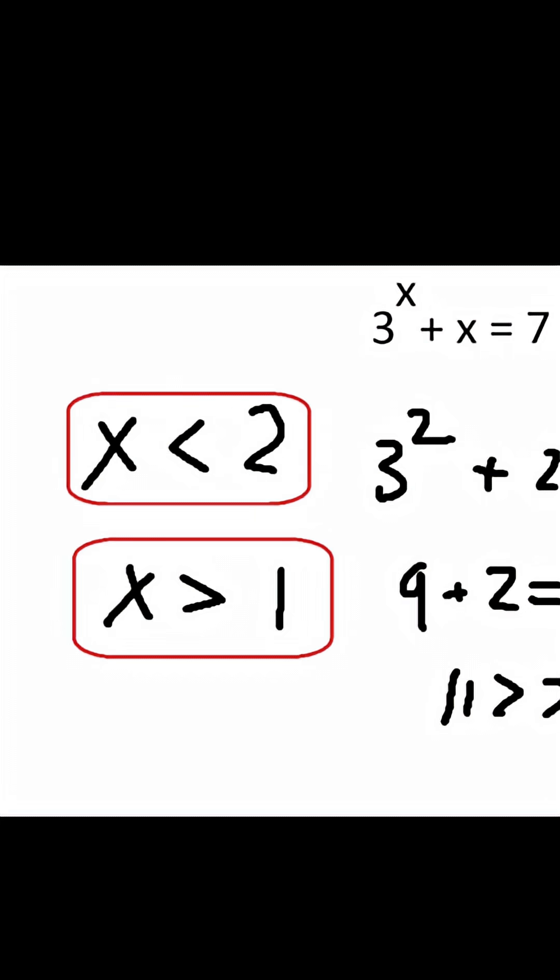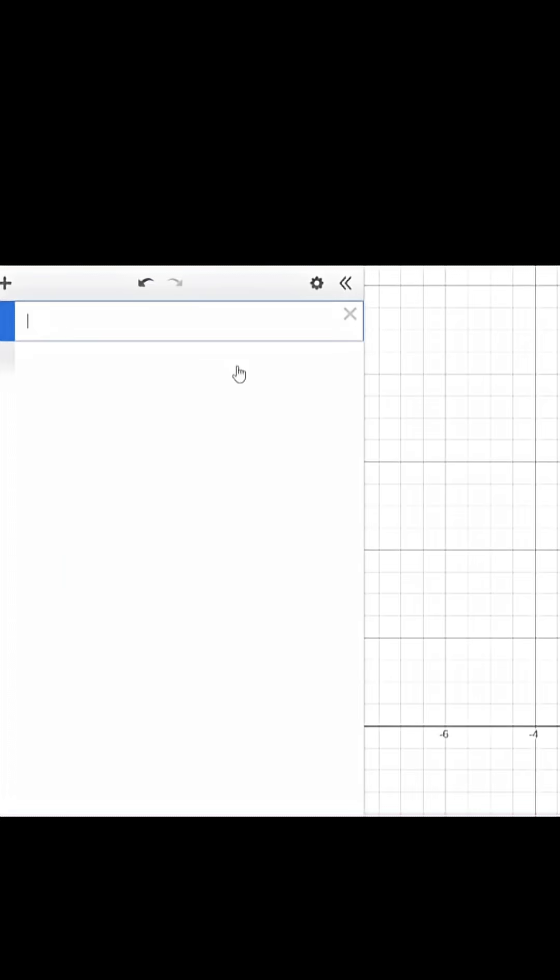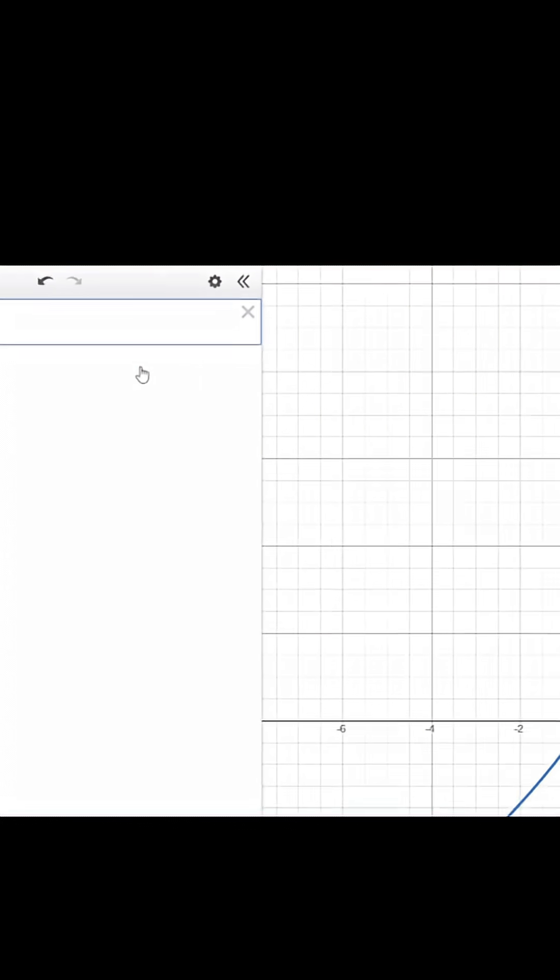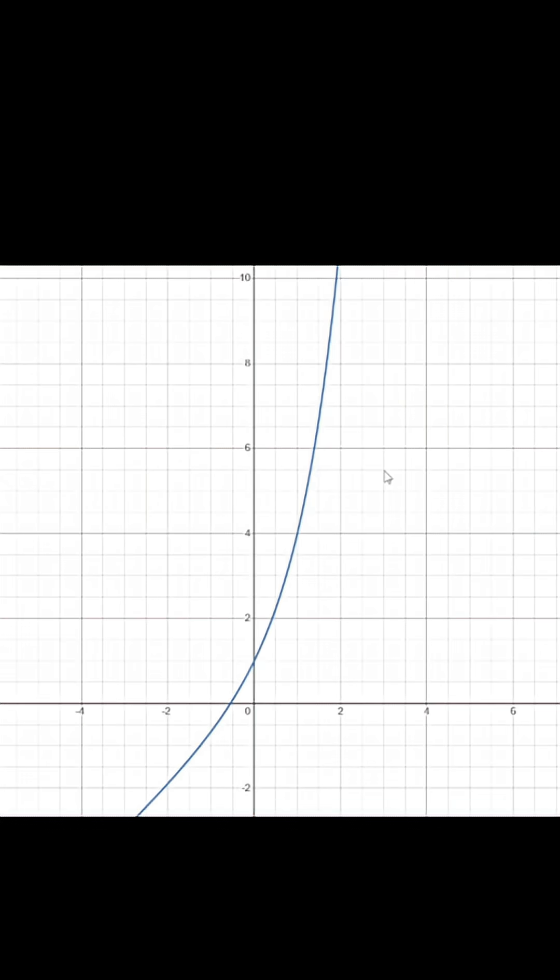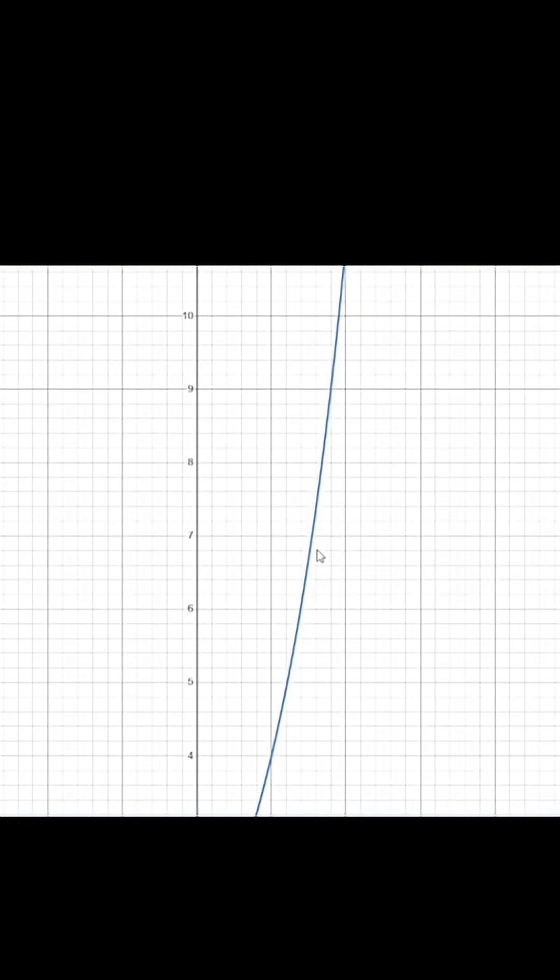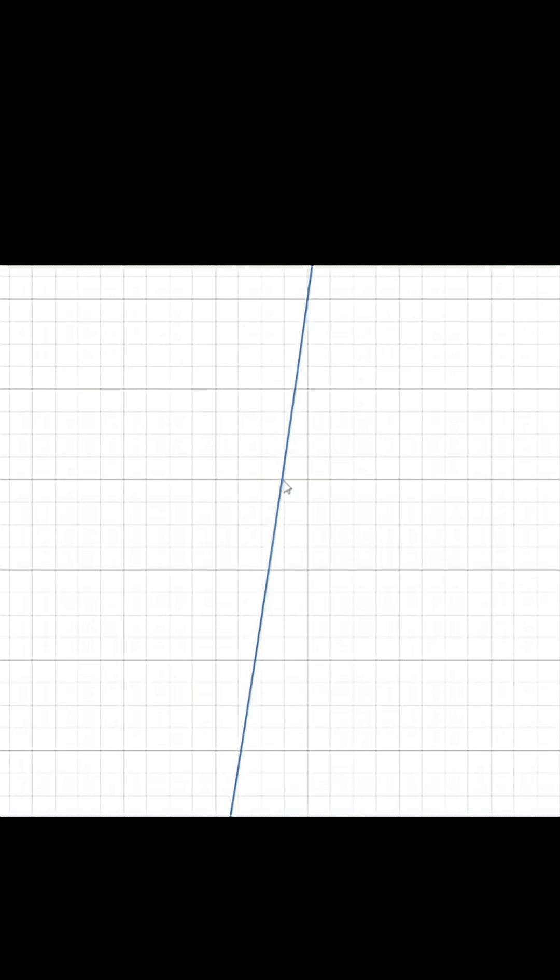And you can just keep going infinitely until you get an approximation. But a fast way to do this is just to pull up decimals. Let's put in our equation: 3 to the x plus x is equal to 7. So y will be our answer. And when y is equal to 7, x is roughly 1.54. And that is our answer. How fun.